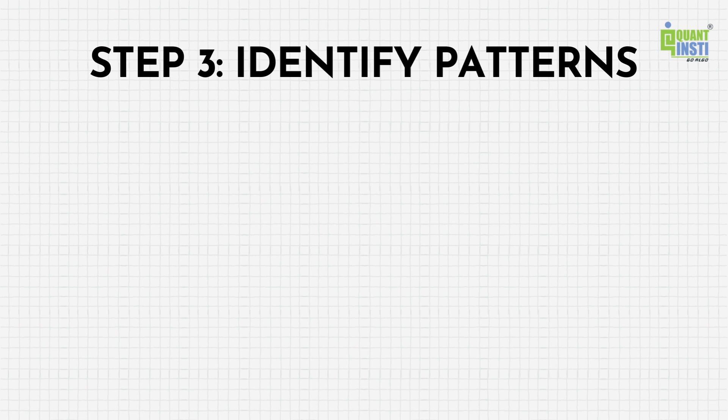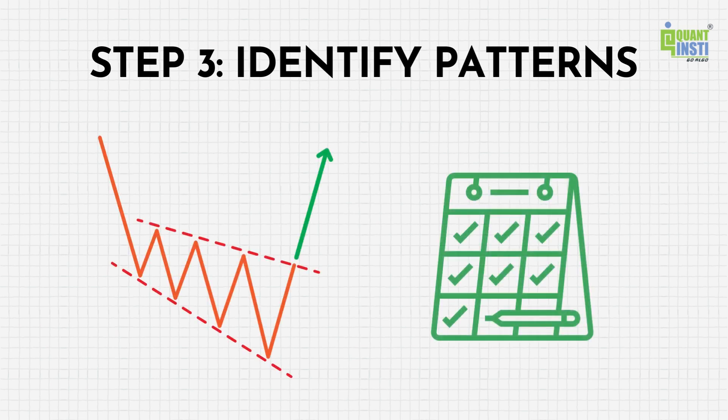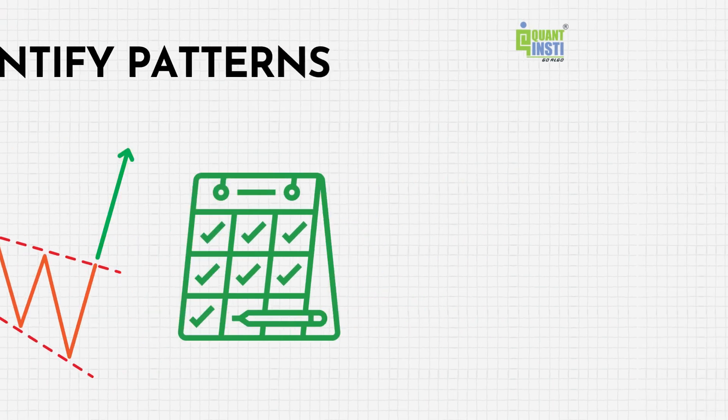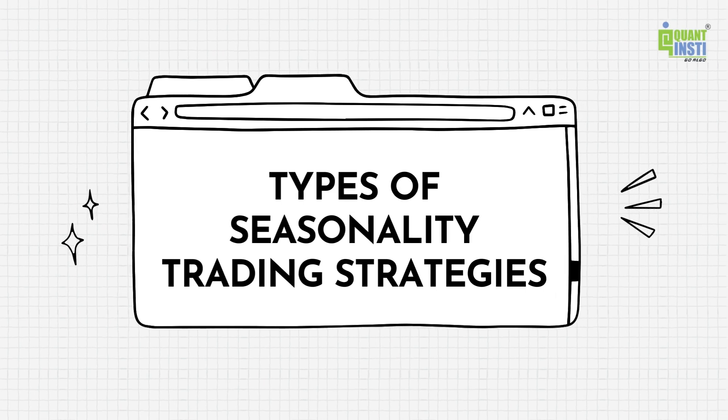Step 3: Identify patterns. Look for consistent patterns or trends. There can be months or quarters where the asset consistently performs better or worse. Step 4: Types of seasonality trading strategies.